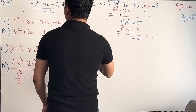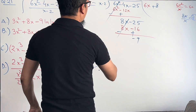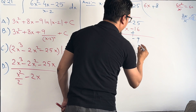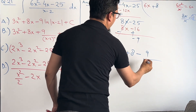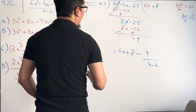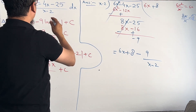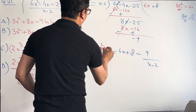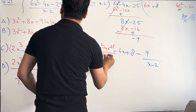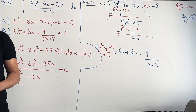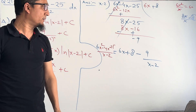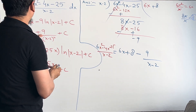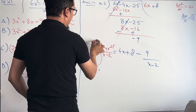So the result of the division is 6x + 8 with a remainder of -9, meaning: (6x² - 4x - 25) / (x - 2) = 6x + 8 - 9/(x - 2). With the help of partial fractions, we have broken this rational function into two terms. Now I am going to integrate both sides.